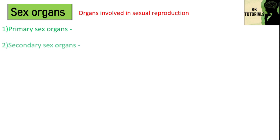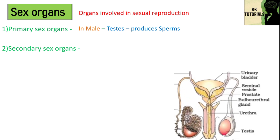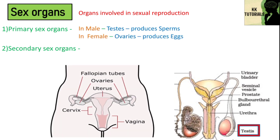Now let's talk about sex organs. Sex organs are the organs involved in sexual reproduction. They are of two types: primary sex organs and secondary sex organs. The primary sex organ in males is the testis, which produces the male gamete known as sperm, and in females the ovaries, which produce female gametes known as eggs.